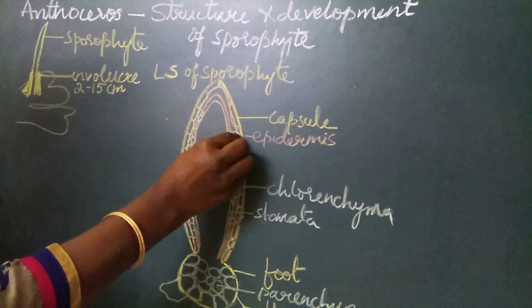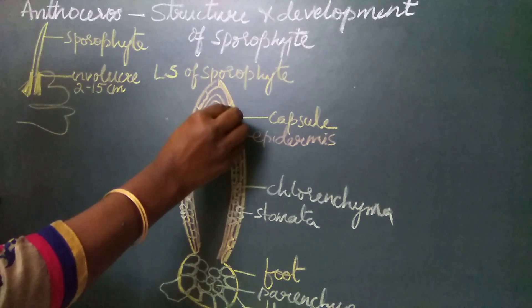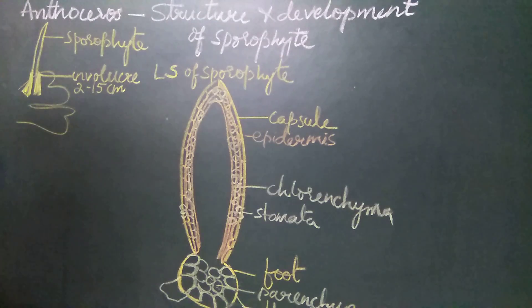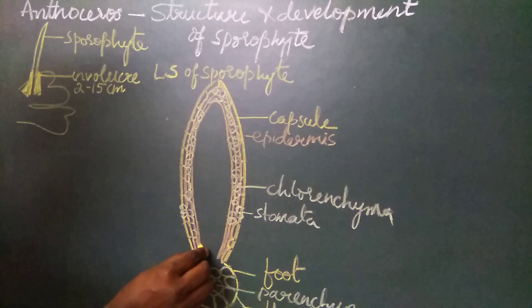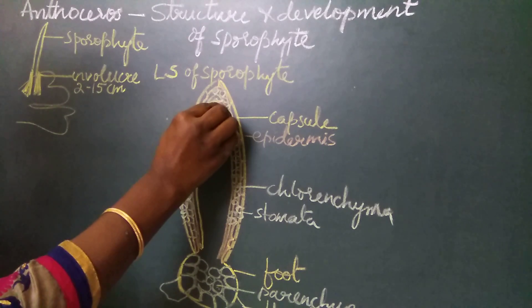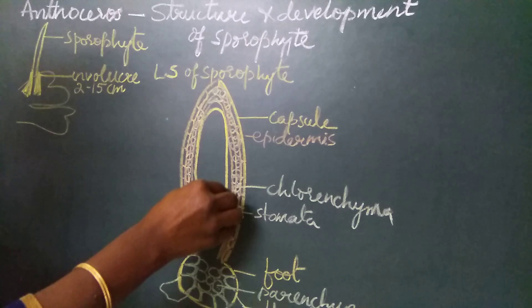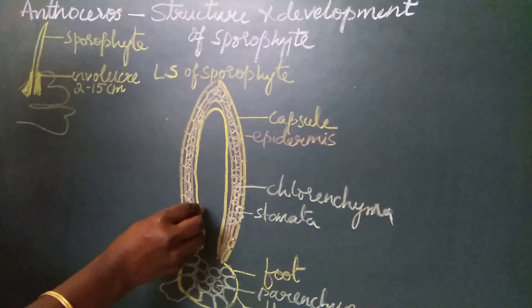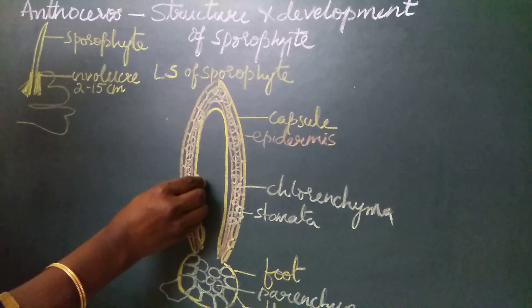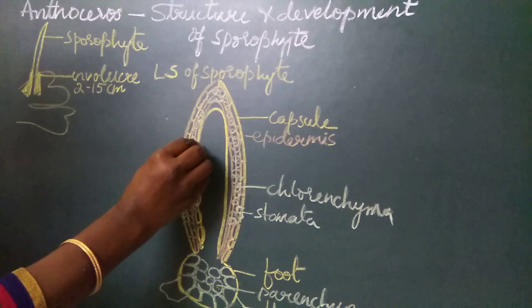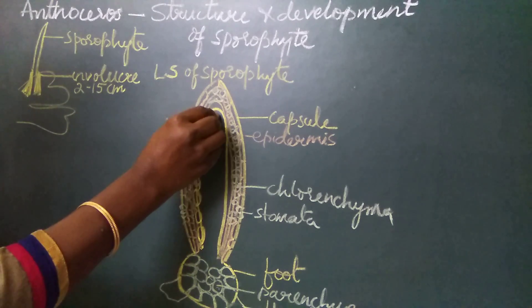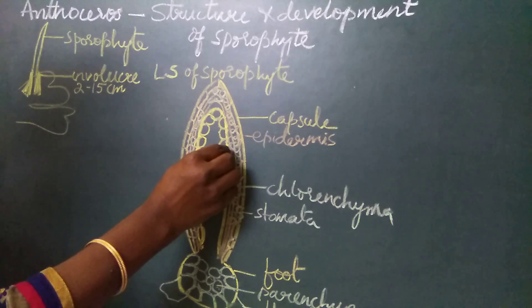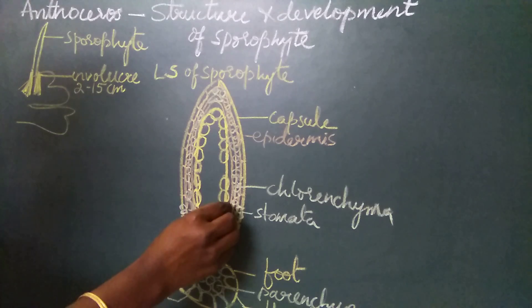The innermost wall layer of Anthoceros is differentiated as an archisporial tissue or sporogenous tissue. The sporogenous tissue contains 50% fertile cells and 50% sterile cells. Approximately 50% of the cells are fertile, and the remaining 50% are sterile.